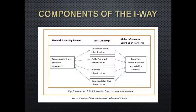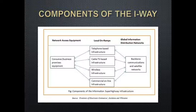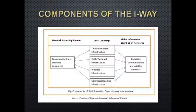The main components of the highway are broadly classified into three categories: first, network access equipment and access media or local on-ramps; and second, the global information distribution network. Under network access equipment you have consumer and business premises equipment; under access media you have television-based, cable TV-based, wireless, and commercial online infrastructure; and the global distribution network includes satellite networks.